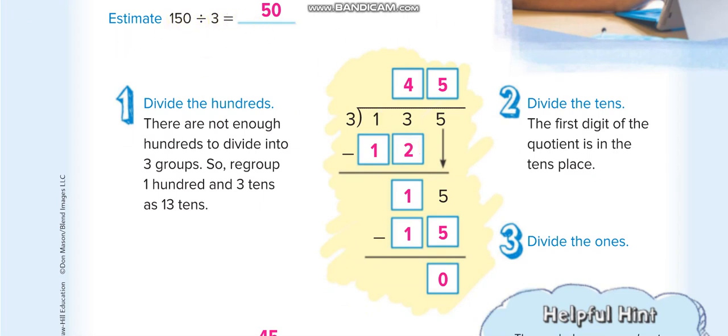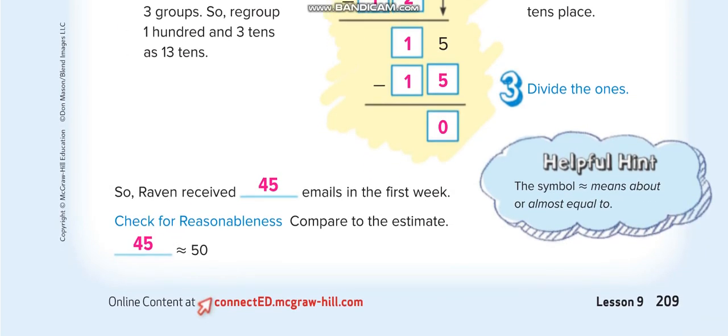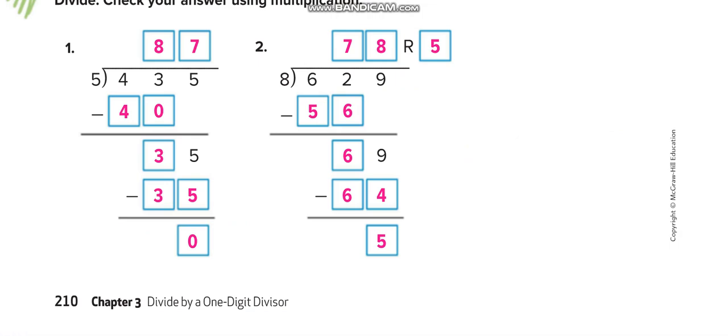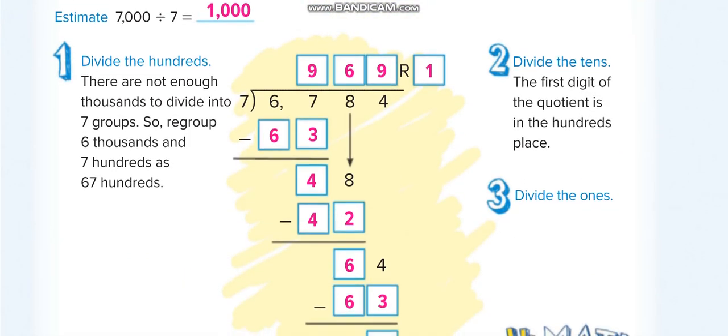Again, in this question, the first number is less than the divisor. We take two digits together: 67. 7 times 9 is 63. 67 minus 63 is 4. Bring the next number down: 8. Here, 7 times 6 is 42 and 7 times 7 is 49, which is more than 48, so we can't take that. 7 times 6 is 42. 48 minus 42 is 6.